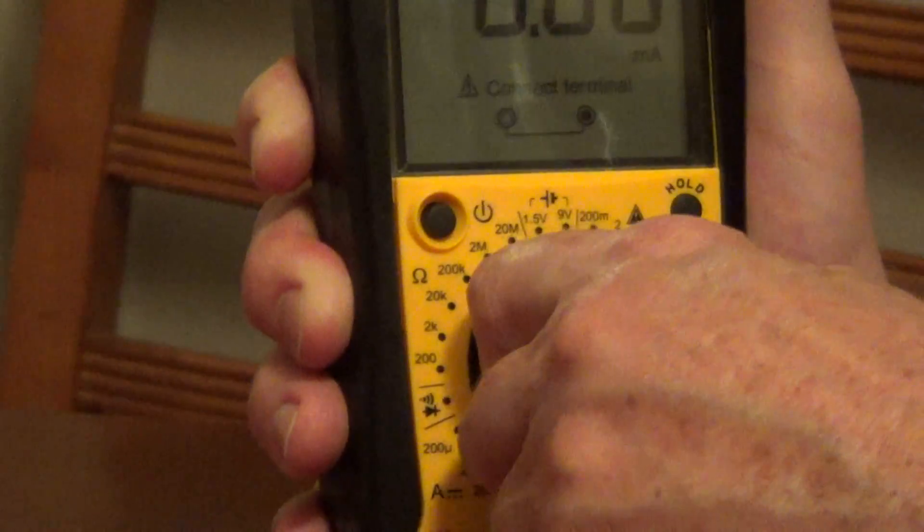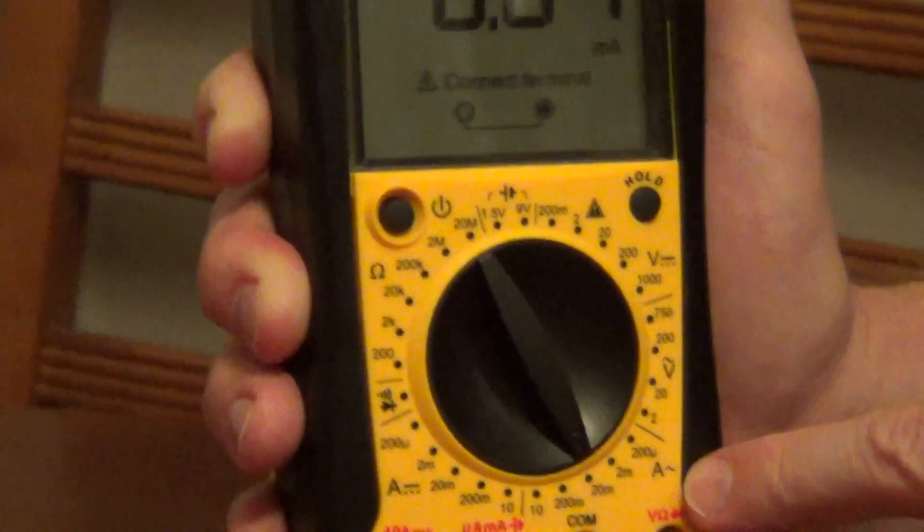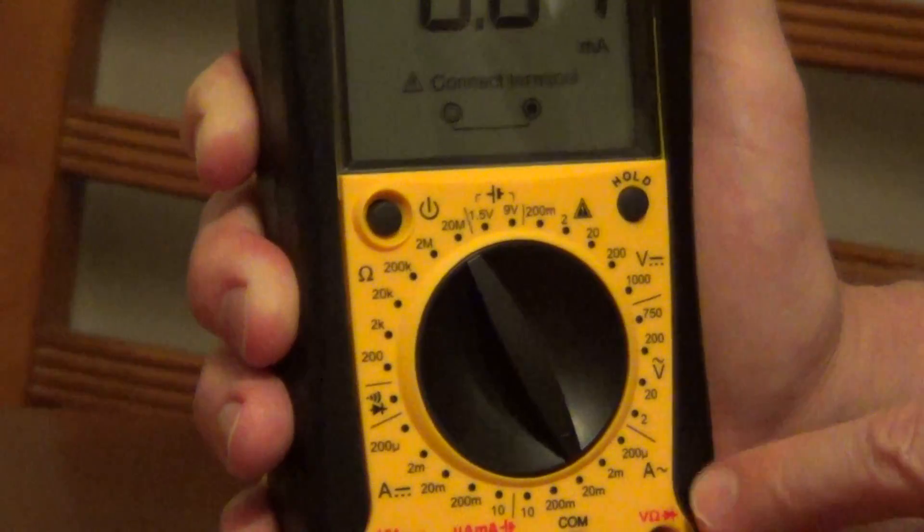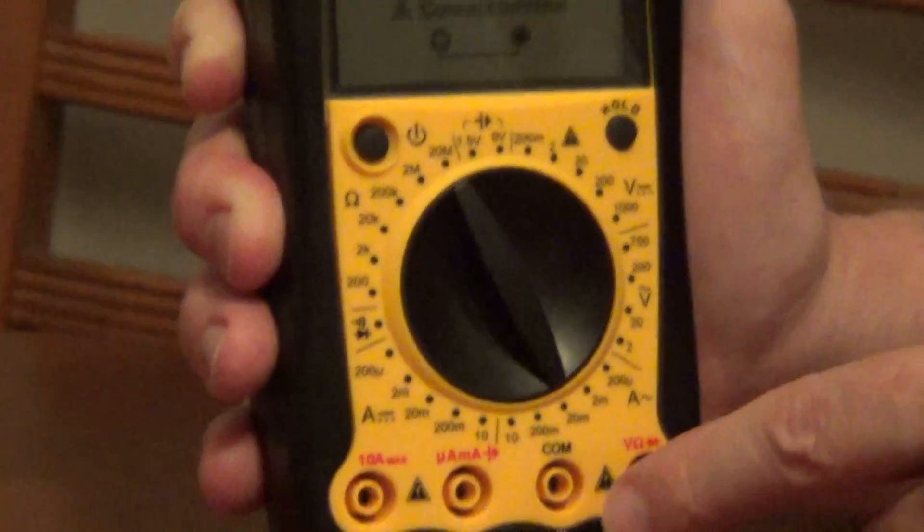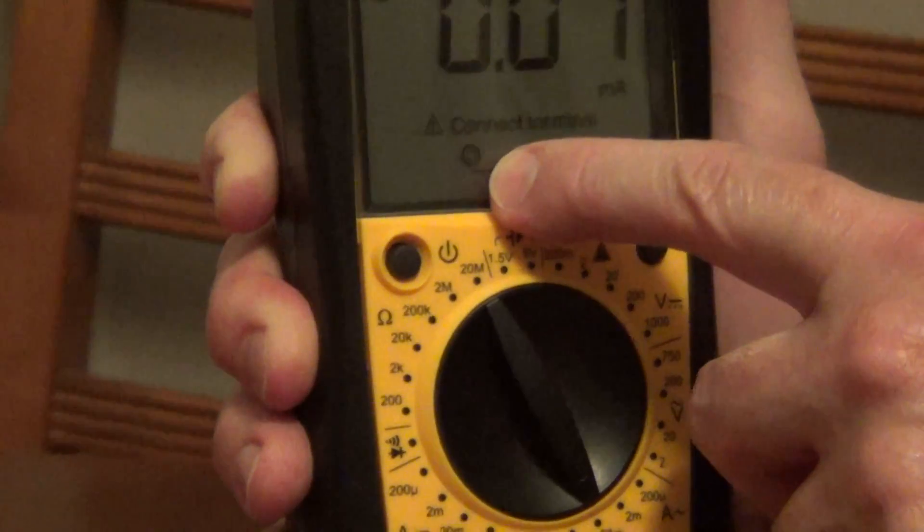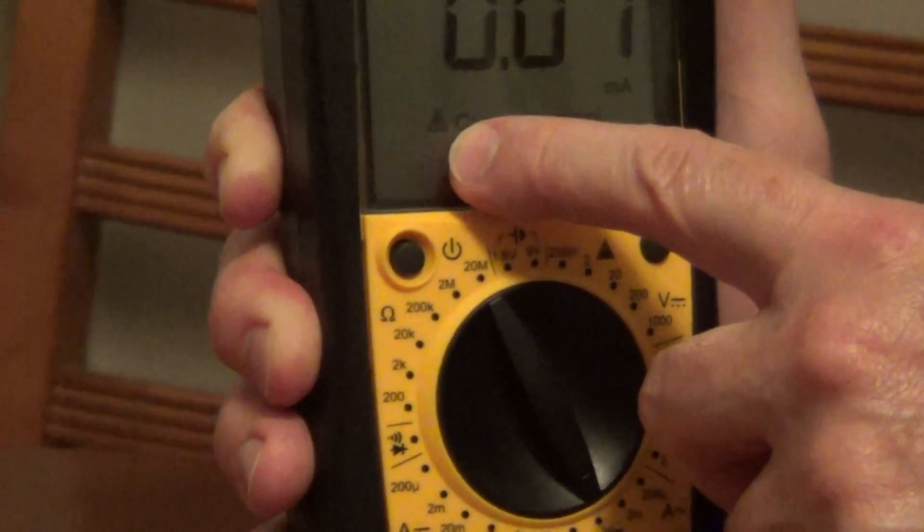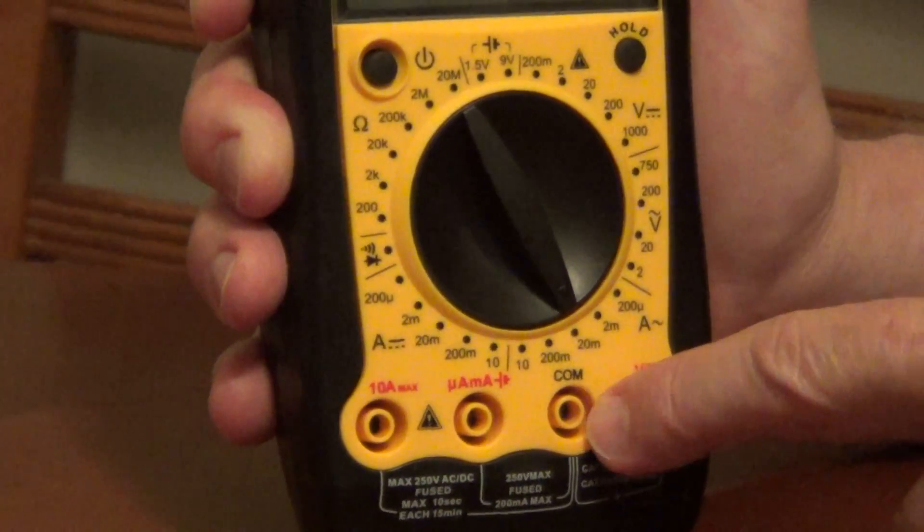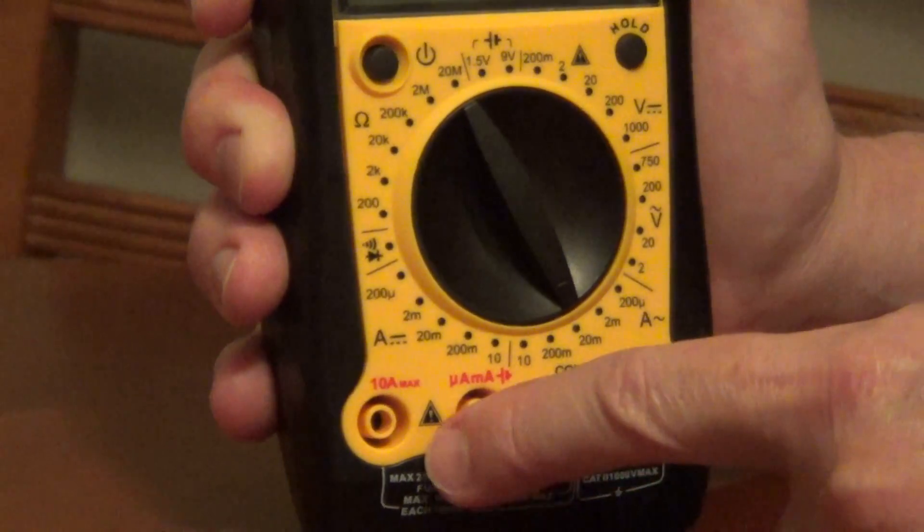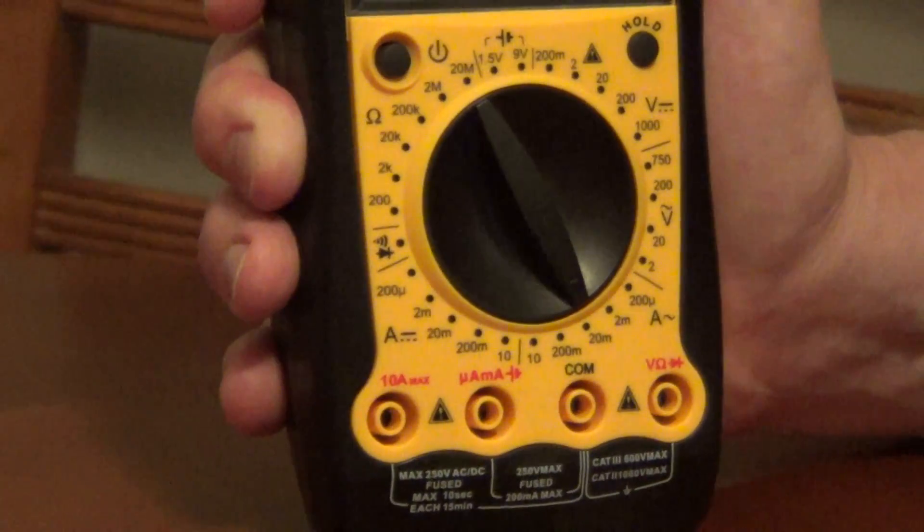Now if I change this to testing for amps alternating current, you can see that this changed. Now we have our black plug going into COM, and this is our red plug with that symbol to the left of it. So we plug our black probe in, plug our red probe here, and now we have that symbol to the left of it.